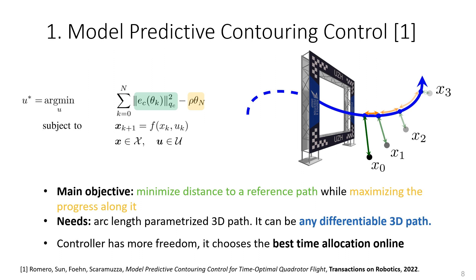In contrast to classical approaches, which need a pre-computed dynamically feasible trajectory, MPCC directly maximizes at every time step the progress through a nominal path while minimizing the contour error. The progress is shown in this picture in orange, and the contour error is shown in green. This nominal path, shown in blue, can be any differential 3D path and does not need to be feasible. While for classical approaches the time allocation of the reference states is done offline at planning time, for MPCC the time allocation is done at every time step, allowing it to better cope with unknown disturbances or model mismatches.